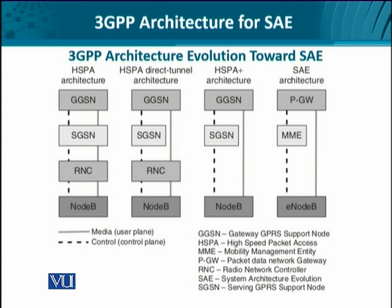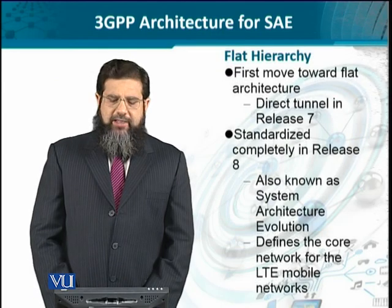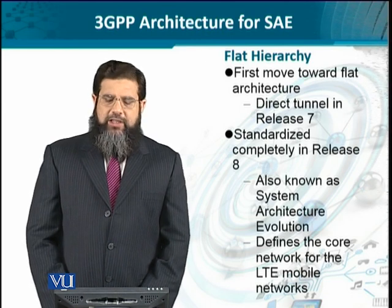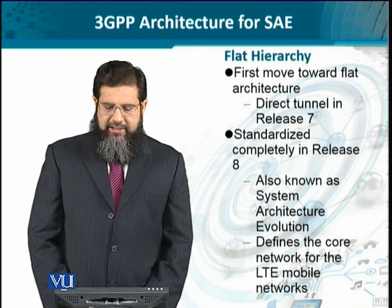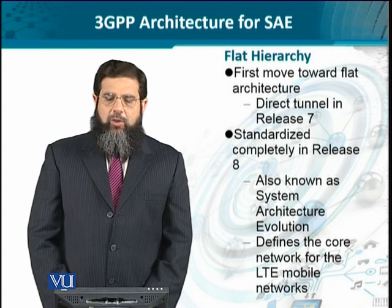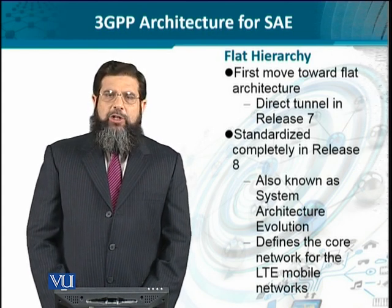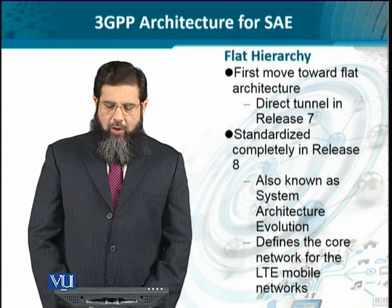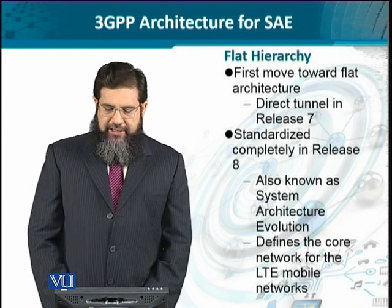Moving on, the RNC in release 8 onwards was deprecated. We just see SGSN and GGSN connected to node B. Then in the system architecture evolution, SGSN was subsumed into the evolved packet core, and we have instead another entity known as the mobility management entity, along with the packet data network gateway. The flatter hierarchy came as a natural consequence, with the first move being the direct tunnel in release 7. This system architecture evolution with the mobility management entity defines today's network, and its functionality primarily resides in the core of the network.